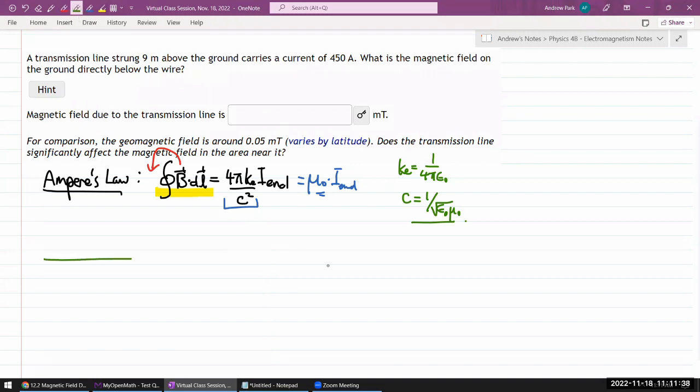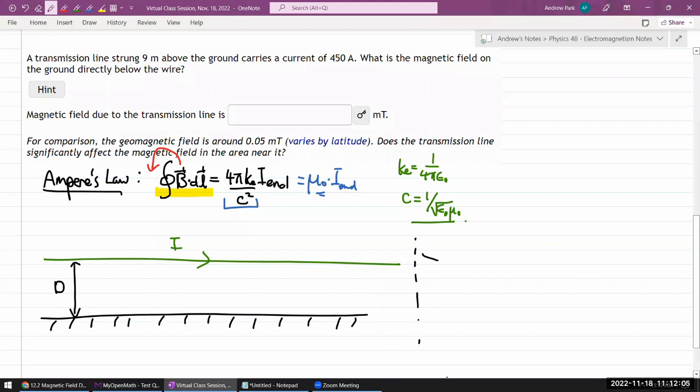In this setup, we have a transmission line, let me just label that as my current, running over some ground that's at some distance. Let me call it capital D. Let me draw a side view, or a different view, where I can imagine looking at this transmission line from this perspective. From that perspective, what I would be seeing is I have current that's coming towards me, and I guess I still have ground down here.